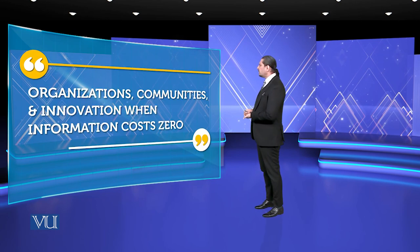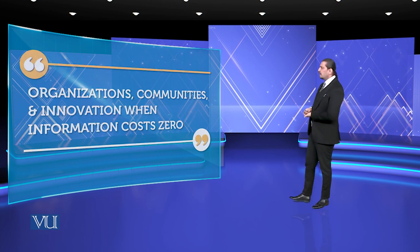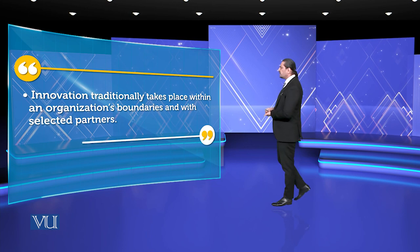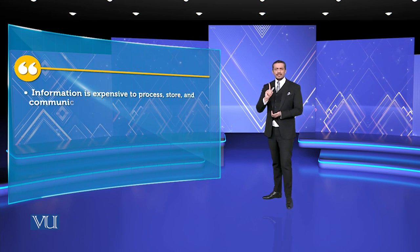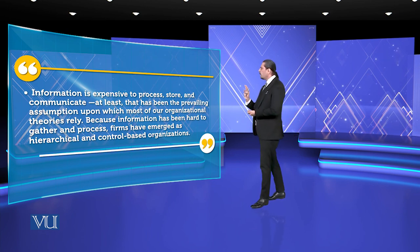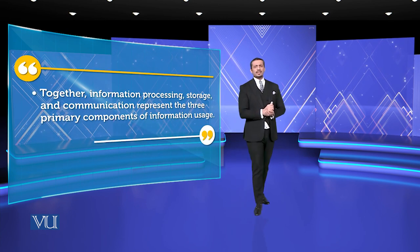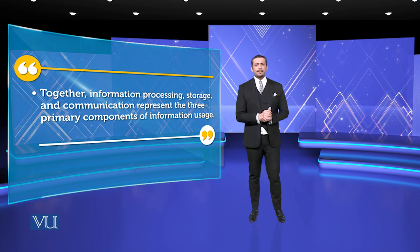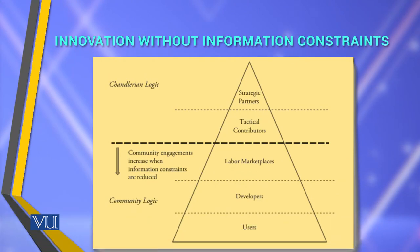Then there is the organization, communities and innovation — when information costs zero. Innovation traditionally takes place within organizational boundaries and with selected patterns. First, information is expensive to process. Second, organization theories rely mostly on prevailing assumptions. Together, information processing, storage, and communication represent the three primary components of information usage. This is called the Cendrarian logic — a strategic partner approach from top to bottom.